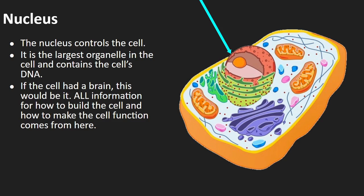In eukaryotic cells, as cells evolved, they evolved another protective layer around the DNA. If the DNA breaks or is damaged, that's it — game over. So it was smart to wrap the DNA in another layer of protection to keep it from getting damaged, and it also houses it in a central location that's easier to get to. All the DNA is there, and so if the cell had a brain, this would be it.